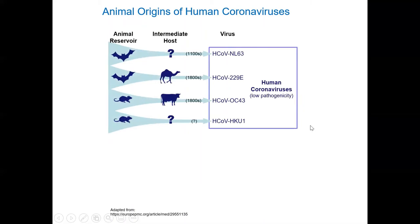Let's talk about coronaviruses. We've known about them since the 1960s. There are four coronaviruses known as common cold coronaviruses - you get a runny nose, sometimes a sore throat, really annoying but that's about it. They're low pathogenicity, meaning they don't usually kill people. A lot of these infections are relatively common - people get infected probably annually in some cases, and in many cases you don't even show disease.